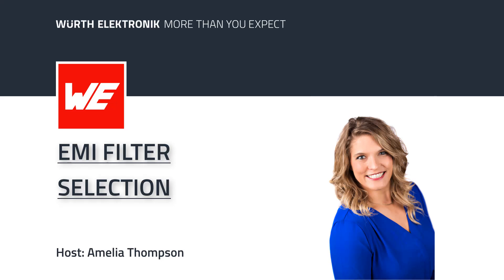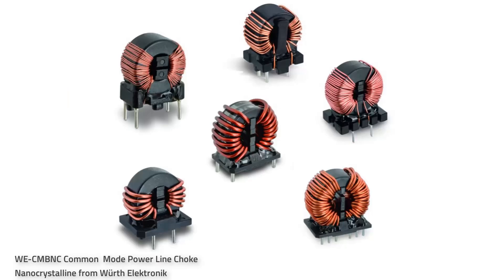Understanding and addressing EMI is crucial for ensuring the safety and functionality of electronic devices. EMI can originate from natural sources like lightning and solar storms, as well as from human-made sources such as power lines, radio transmitters, and household appliances. EMI can travel through wires, disrupt sensitive electronic components, and spread through the air as electromagnetic waves. Internally, EMI can be generated by switching circuits, motors, transformers, and high-speed data lines, creating high-frequency noise that interferes with other circuits.